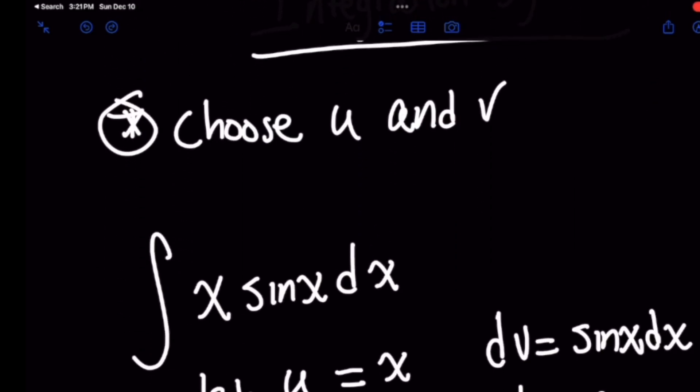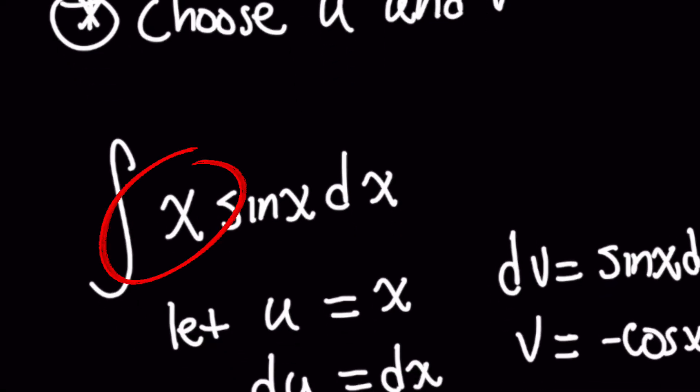I'm going to choose u as this x term here and the reason why is because if you think of the integral here I want you to break it up into two parts f of x and g of x. This f of x term can be x and g of x can be sin of x.